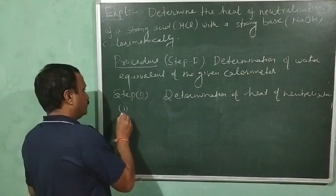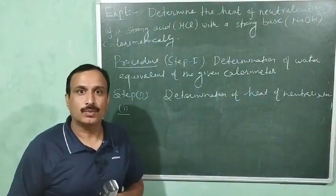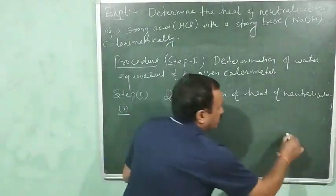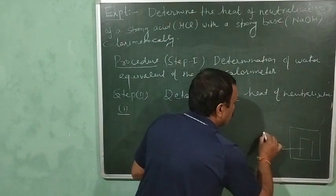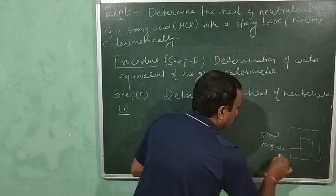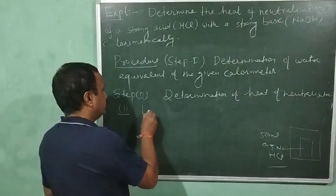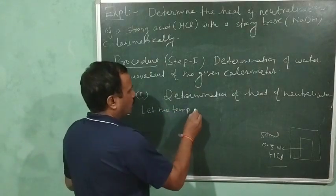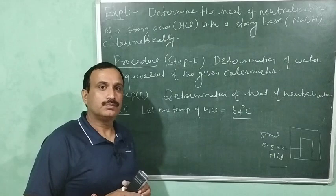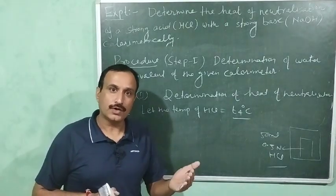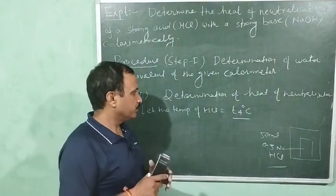Step number two involves the determination of heat of neutralization. In the first step of this procedure, we take 50 ml of 0.5 normal HCl in the given calorimeter. We note its temperature, and let the temperature of HCl be equal to T4 degrees Celsius. T4 is used because T1, T2, and T3 are the temperatures of cold water, hot water, and the mixture during the determination of water equivalent.